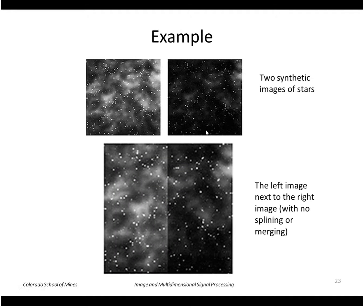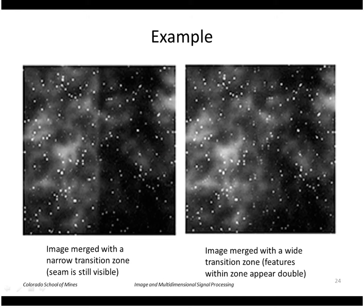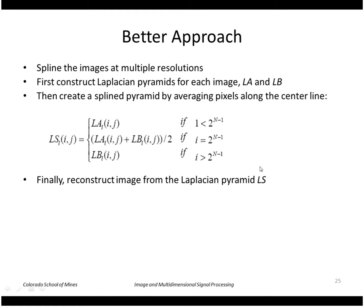Here's an example. Taking the left half of one image and the right half of another gives a visible seam. Using a narrow transition zone, the seam is still pretty visible. If we make the seam wider, the seam is no longer visible. However, now we have duplicated points — for example, a star that was a single point in the original image is doubled in the blended image. So that's not good.